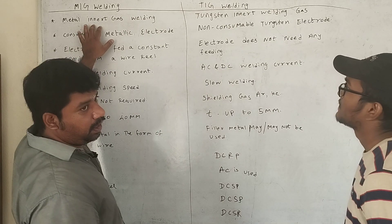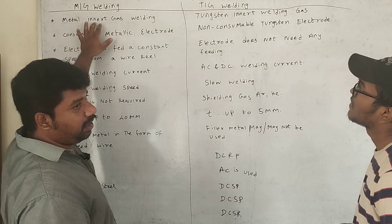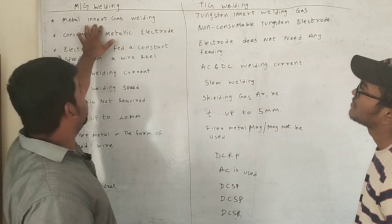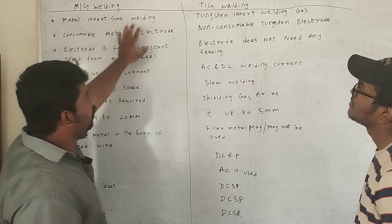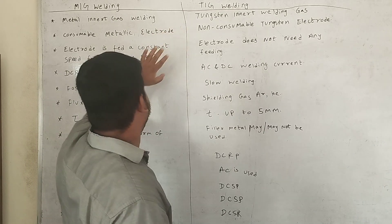MIG and TIG welding: MIG is metal inert gas welding, and TIG is tungsten inert gas welding.